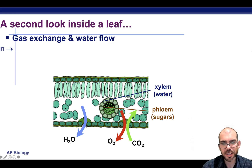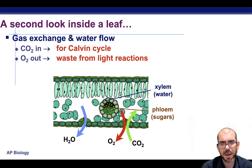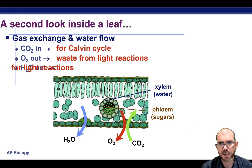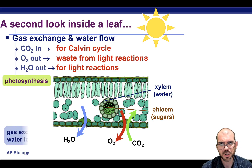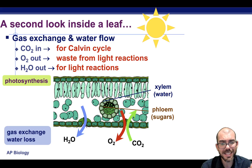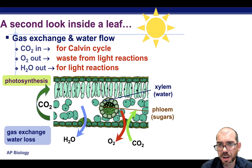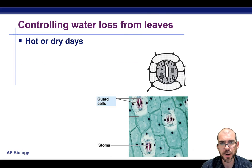Taking a second look inside that leaf, there's a lot going on. CO2 is going in for the Calvin cycle, oxygen is coming out as a waste product from the light reactions, and water is coming out from the light reactions and from transpiration. This is all happening during photosynthesis. When those stomates are open, there is gas exchange and a loss of water. These gases are cyclical and can remain in the leaf for cellular respiration as well.